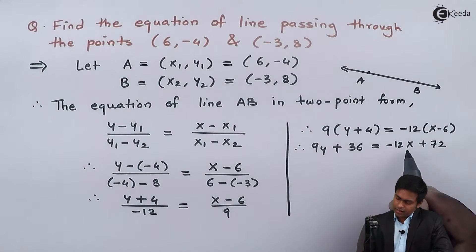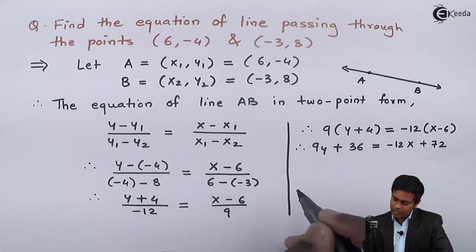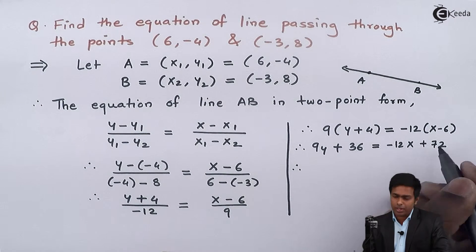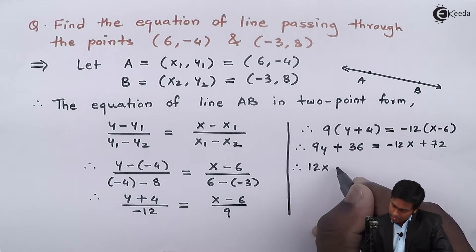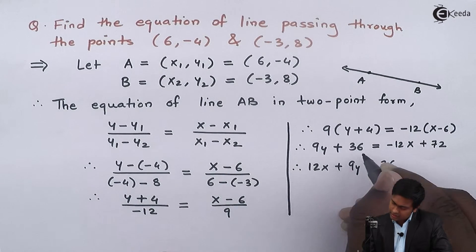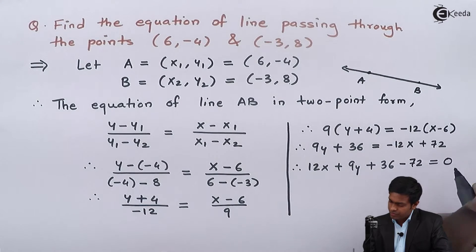Taking -12x and 72 to the left-hand side, we get 12x + 9y + 36 - 72 = 0.